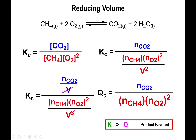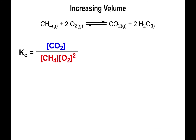The volumes don't fully cancel — you end up with volume squared left over in the denominator. So if you reduce the volume, the bottom of the fraction becomes larger, making the overall fraction smaller, meaning K is greater than Qc. The reaction shifts to the product side. Looking carefully, the reactant side has three gases while the product side has only one. Reducing the volume shifts equilibrium to the side with the fewest gases — that's the rule.